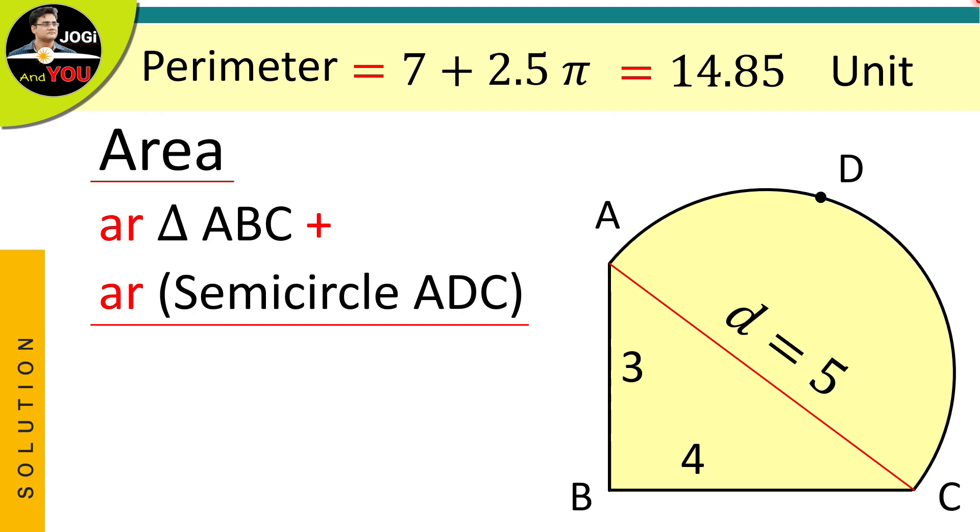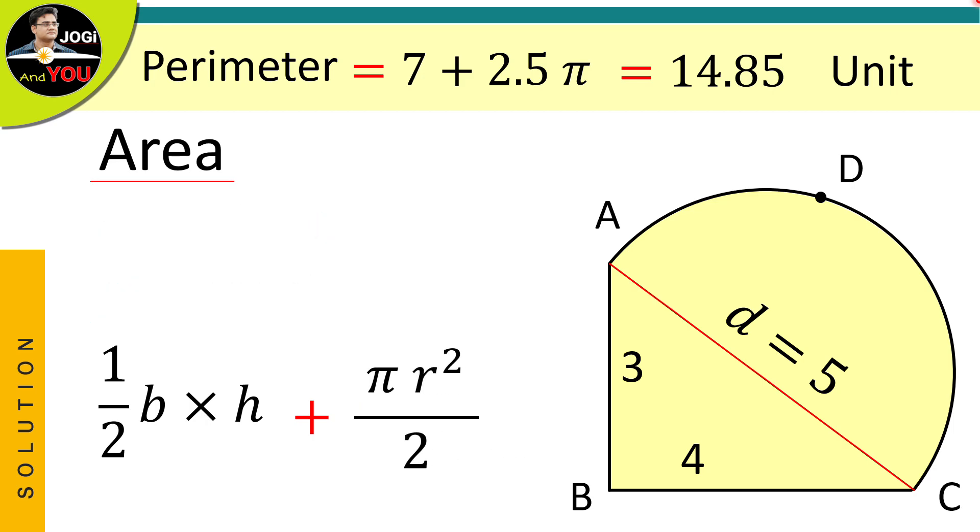So, without delay, we will write the area of triangle ABC plus the area of semicircle ADC. Firstly, we will take the area of triangle which is half of the base multiplied by height. And then, we will take the area of semicircle which is half of pi R squared.